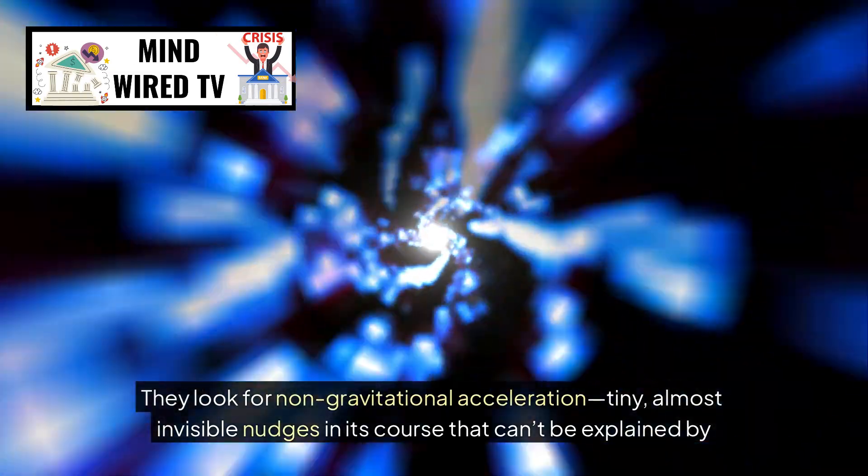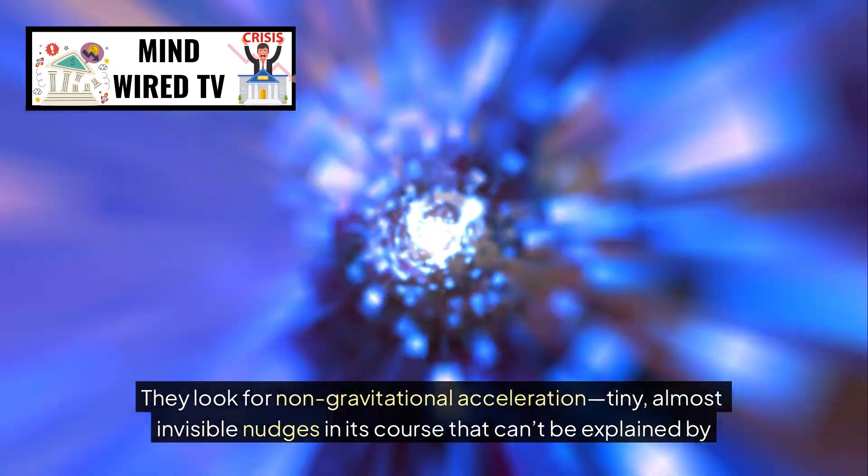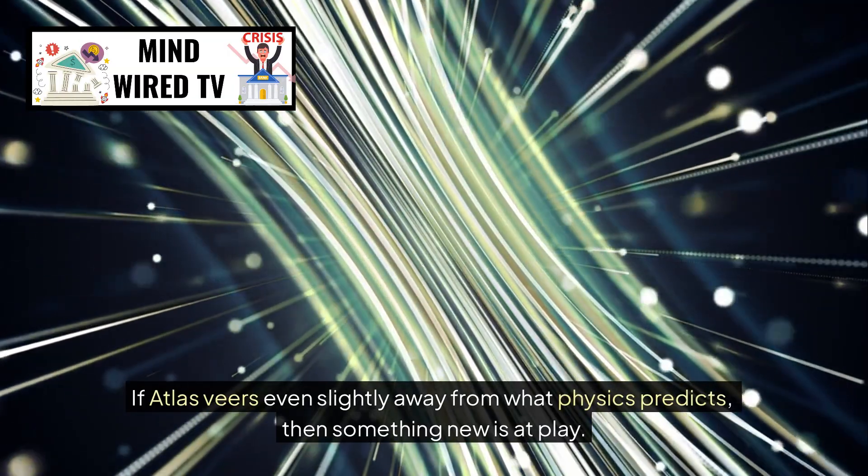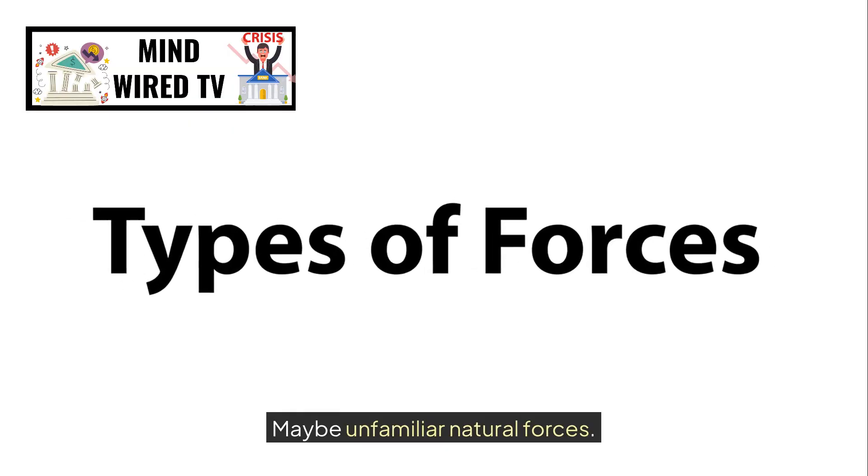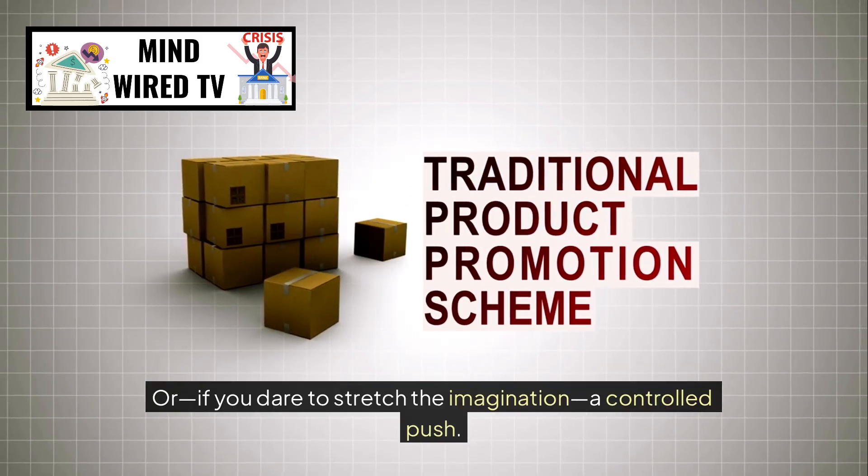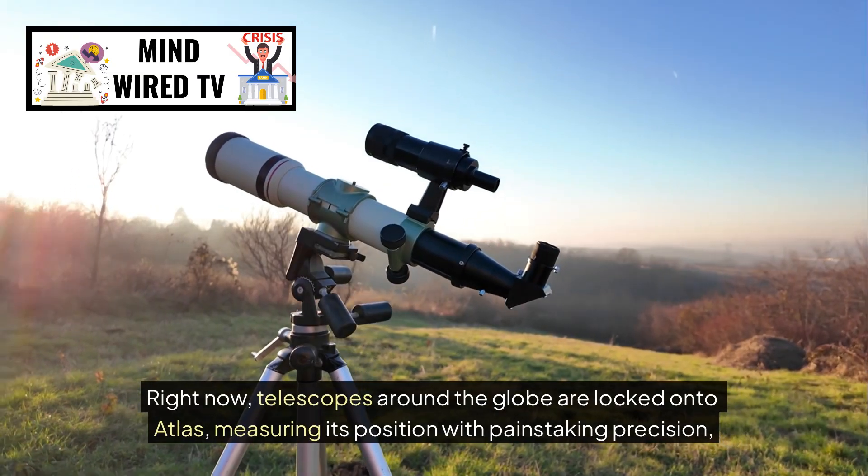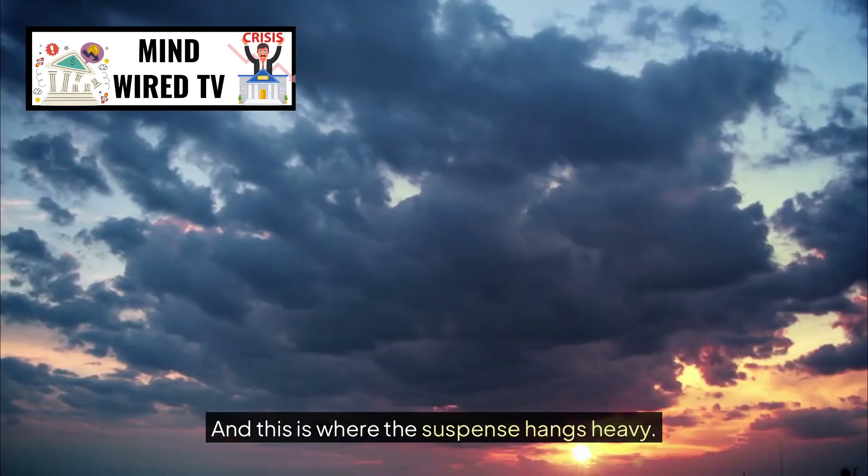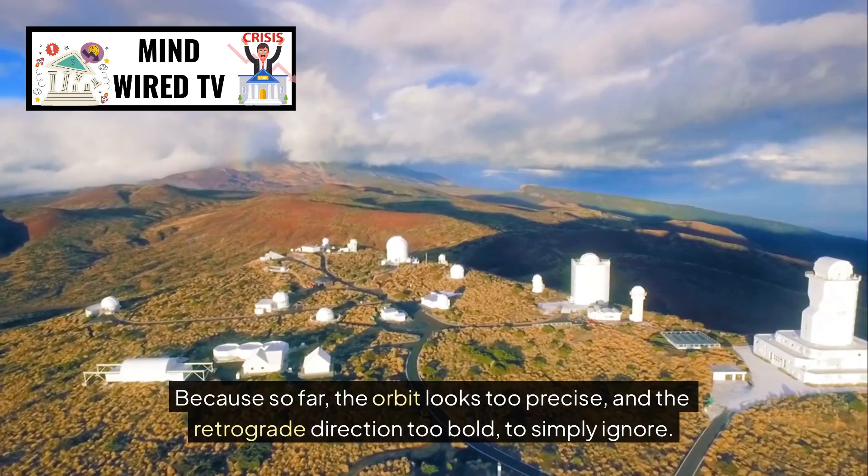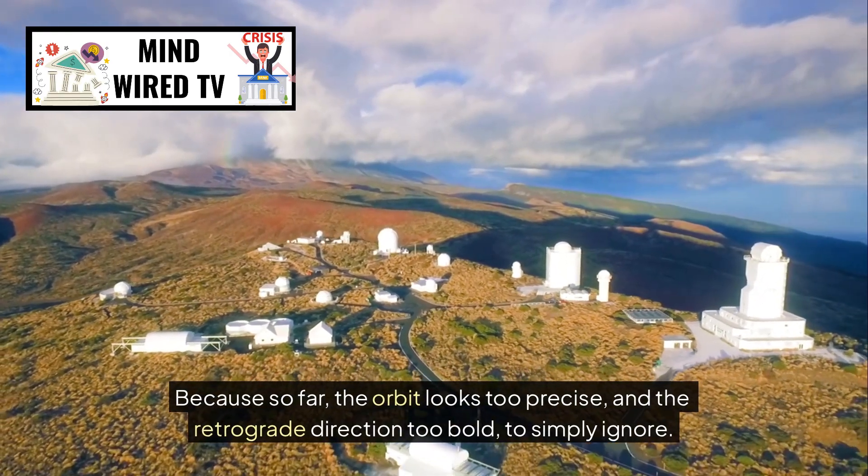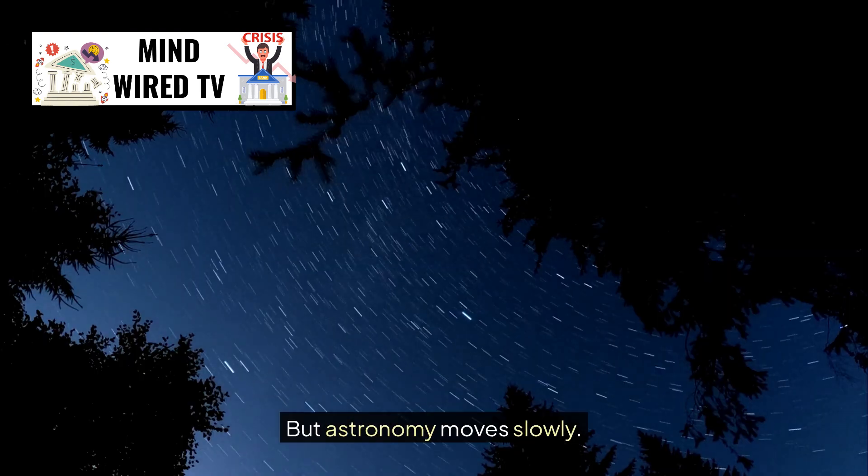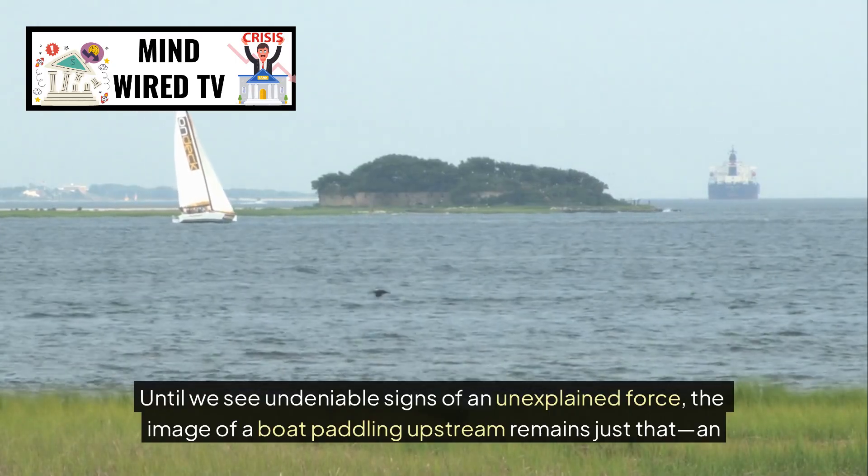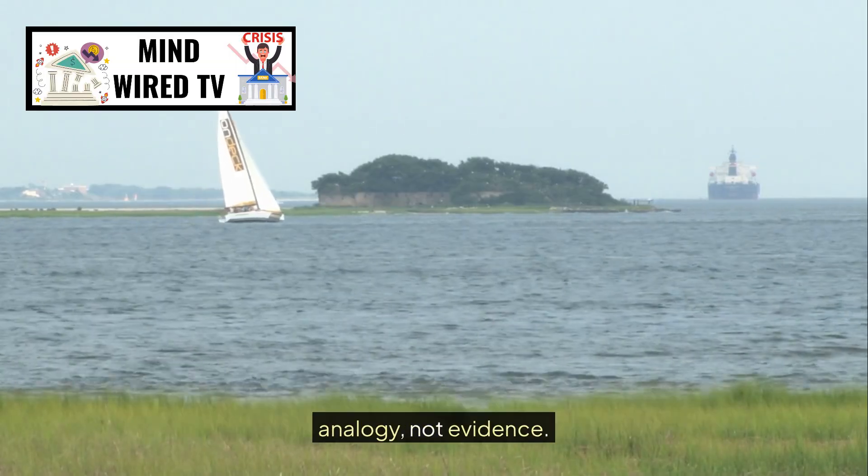So what do they look for instead? They look for non-gravitational acceleration, tiny, almost invisible nudges in its course that can't be explained by gravity alone. If Atlas veers even slightly away from what physics predicts, then something new is at play. Maybe unfamiliar natural forces, or if you dare to stretch the imagination, a controlled push. Right now telescopes around the globe are locked onto Atlas, measuring its position with painstaking precision, waiting to see if its course shifts. And this is where the suspense hangs heavy. Because so far, the orbit looks too precise and the retrograde direction too bold to simply ignore, but astronomy moves slowly. Patience is the rule. Until we see undeniable signs of an unexplained force, the image of a boat paddling upstream remains just that, an analogy, not evidence.